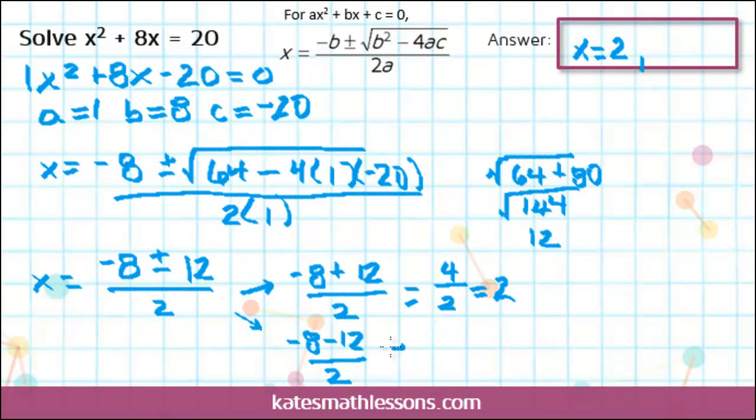To find the second answer, you use the subtraction one. Negative 8 minus 12 is negative 20. Negative 20 divided by 2 is negative 10. So that means our second answer is negative 10.